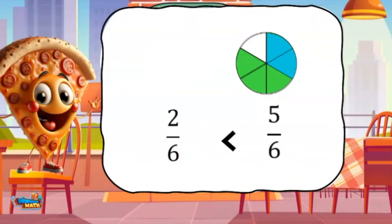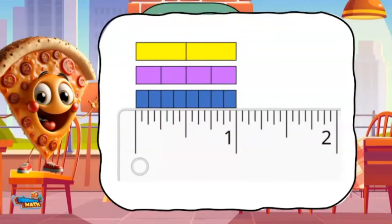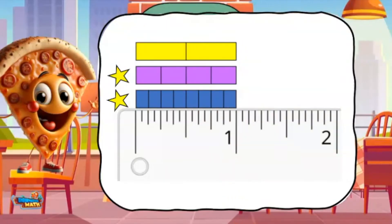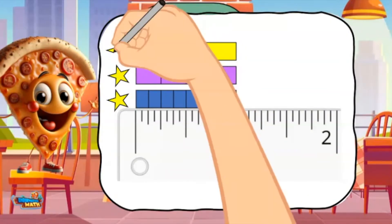Let me show you. Fractions can also be represented on a ruler. The blue rectangles represent 1 8th of an inch because it takes 8 parts to make a whole. The purple rectangles represent 4ths because it takes 4 parts to make the whole.